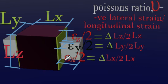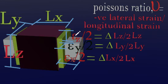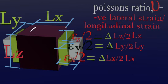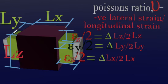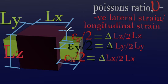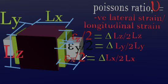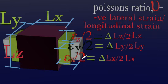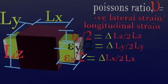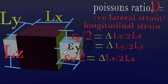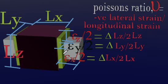Assuming the original length in the x direction is Lx, the original length in the y direction is Ly, and the original length in the z direction is Lz — they deform by the amounts shown and we divide these deformations by two, because in the diagram we've only shown one direction while in actuality the deformation happens in two directions, as the animation makes clear.